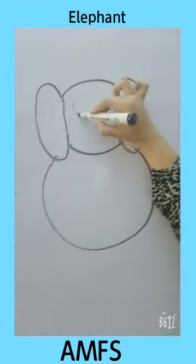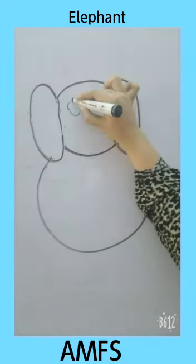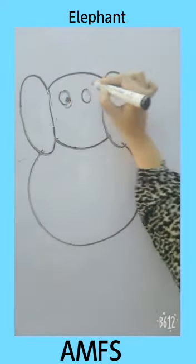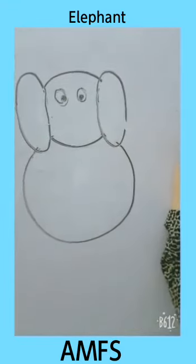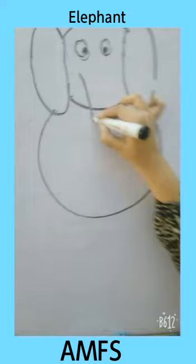Draw two eyes in small circle shapes. Draw one nose in V shape.